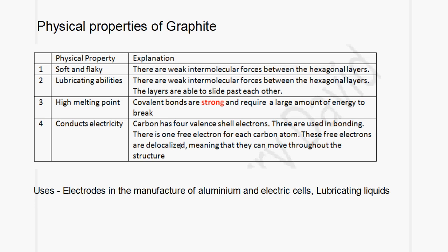This is the reason why graphite is able to conduct electricity. Graphite is used in the manufacture of aluminium in the electrolysis process, where it is used as an electrode. It is also used in electric cells and in lubricating liquids — because of its lubricating abilities and its electrical properties.